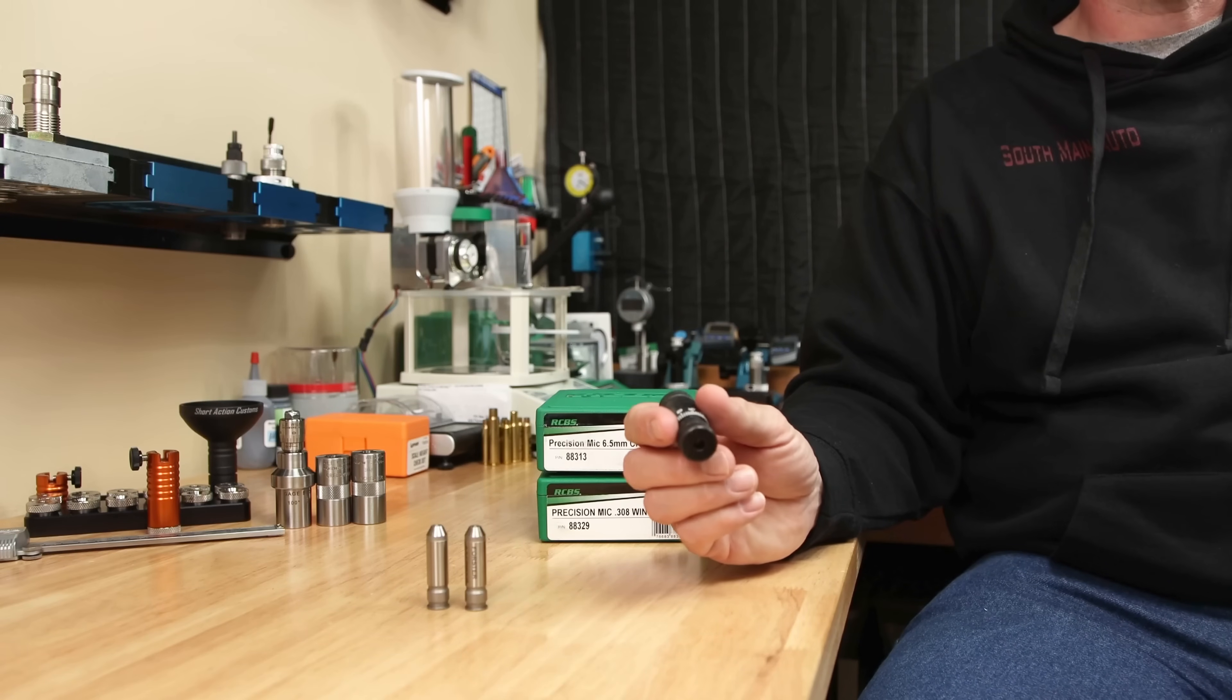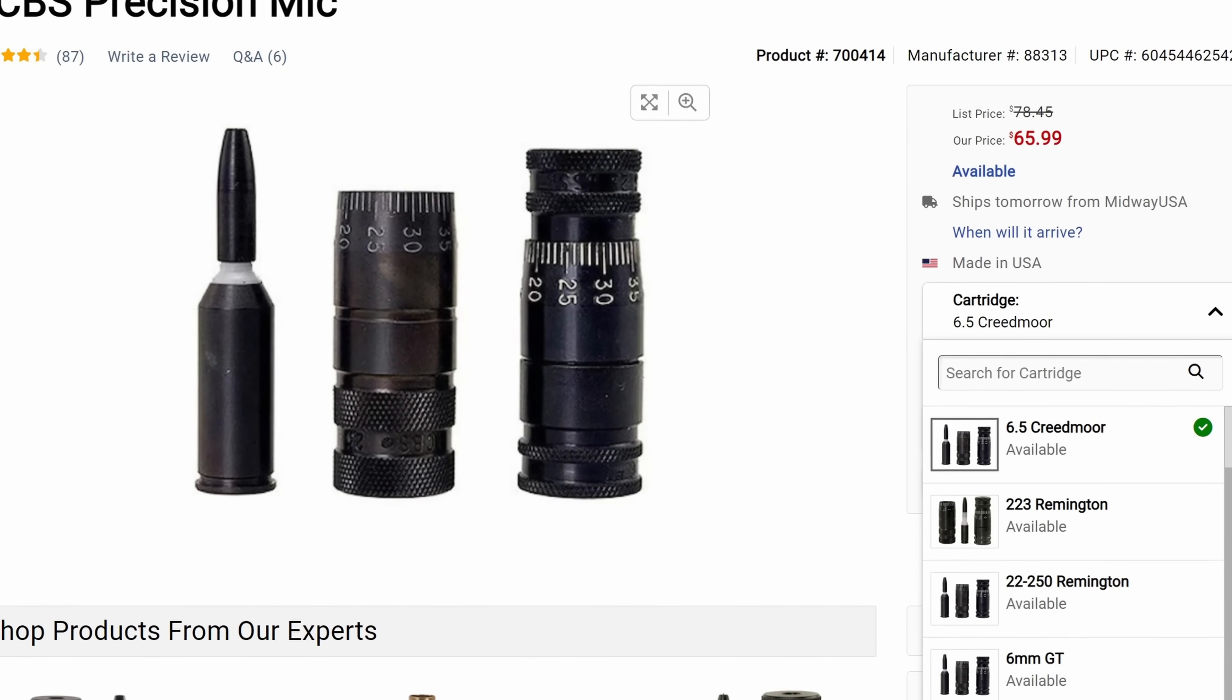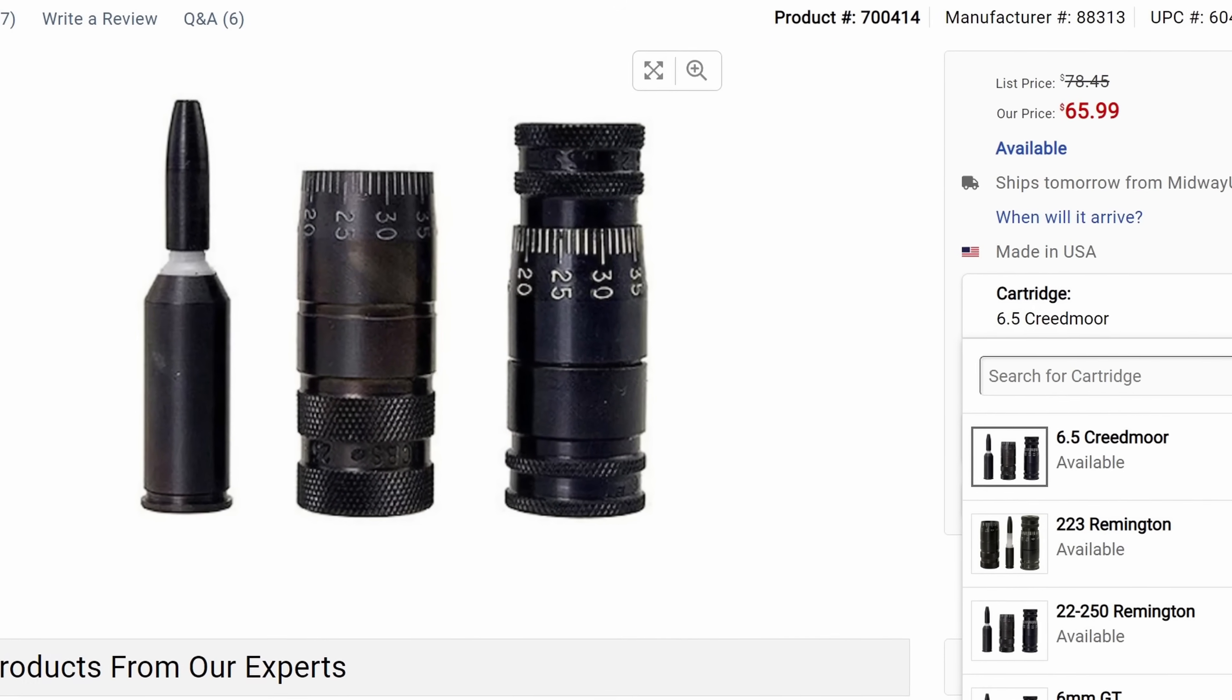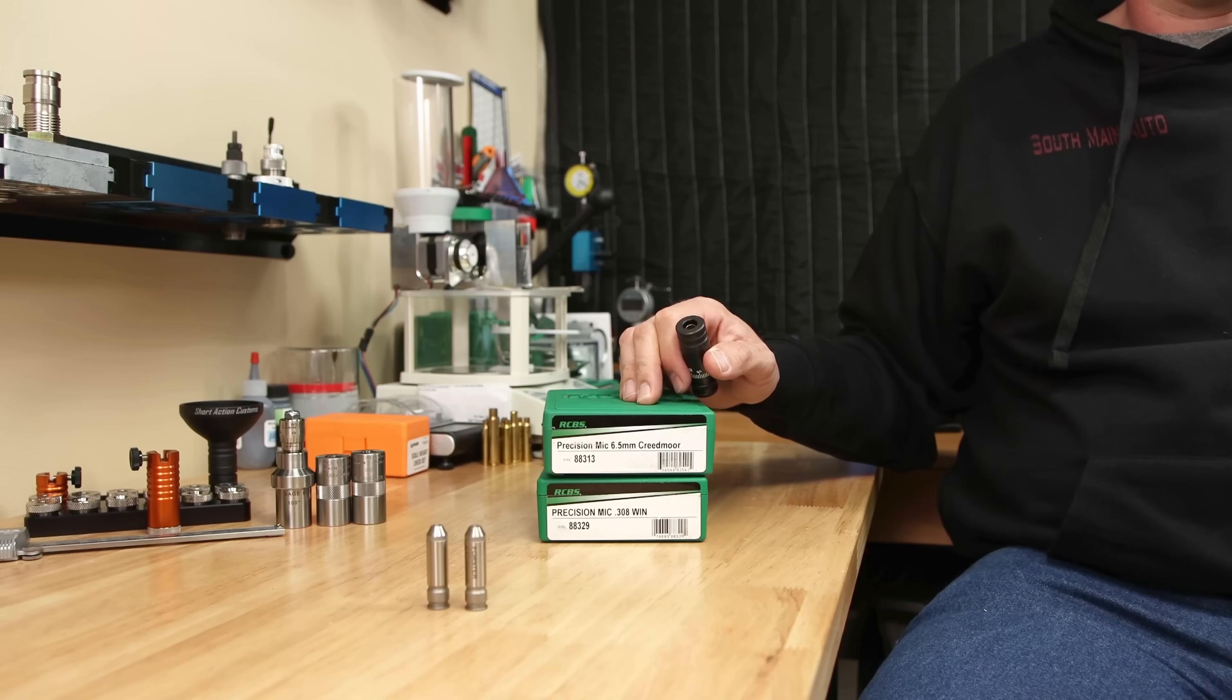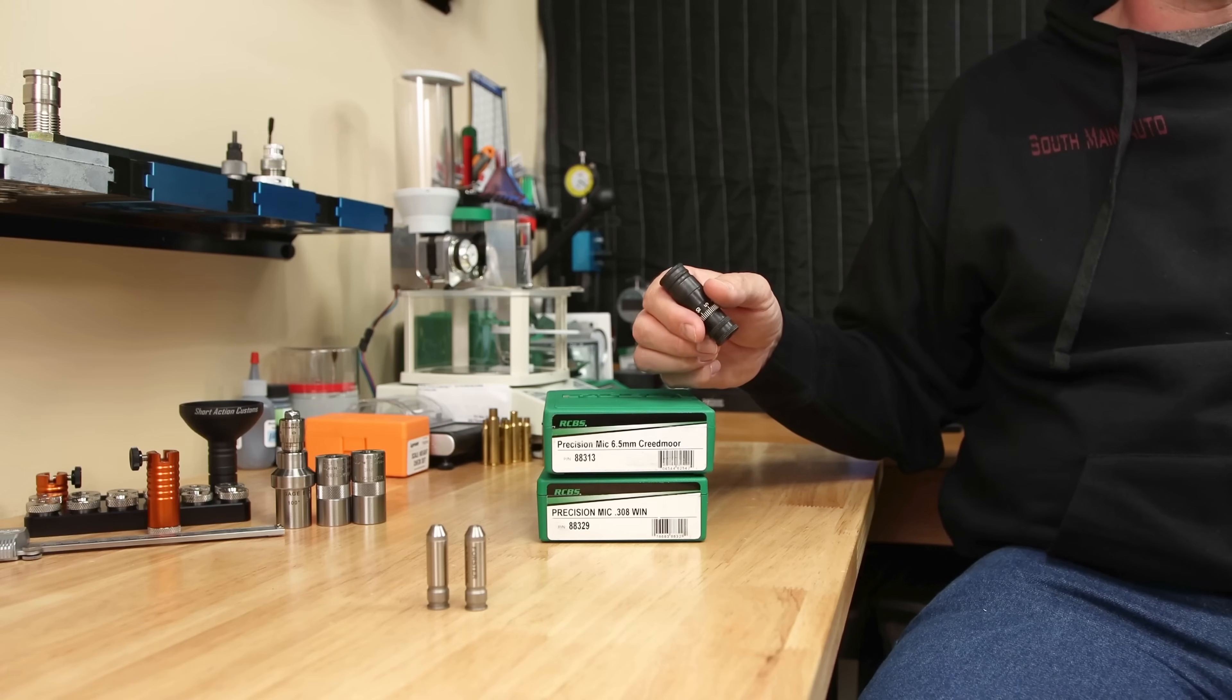This is an extremely important detail. Using other methods, you probably want to remove the primer before measuring as this can quite easily affect your measurements. For this tool, it's not really a concern. The real downside to this tool in my opinion is that they're cartridge specific. You do need one for every caliber you load if you want to use them. And the cost can add up pretty quick. But overall, it's a really neat tool and it's very easy to use.